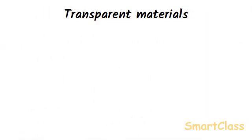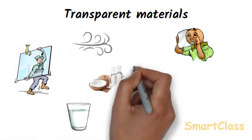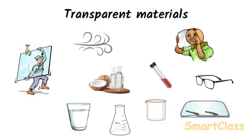Transparent materials are those which allow the light to pass through them. The materials like glass, air, water and coconut oil are transparent materials. They allow almost all the light to pass through them, and we can see clearly through transparent materials. Examples of transparent objects are spectacles, test tube, beaker, flask, car windscreen, etc. If we are able to see through an object clearly, it is allowing all the light to pass through it, and hence it is a transparent object. The transparent objects allow all the light to pass through them because they do not absorb or reflect any light.